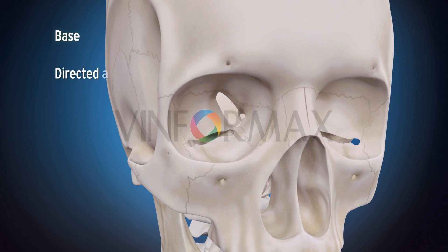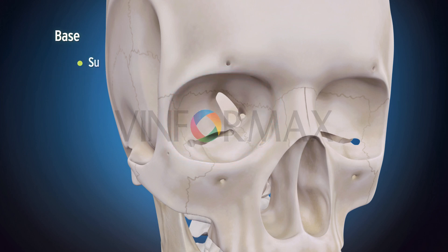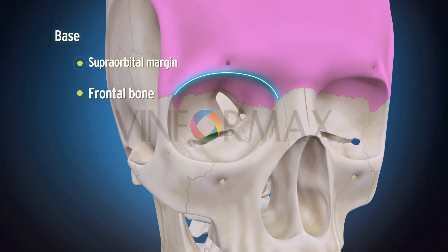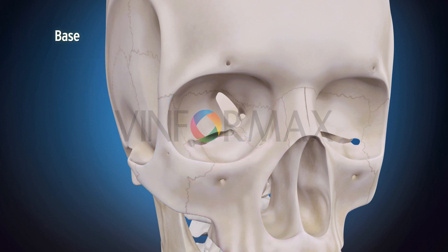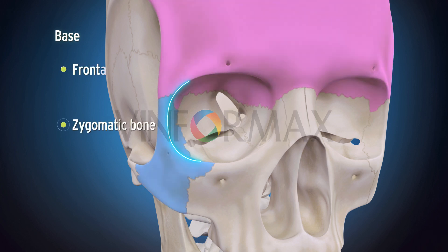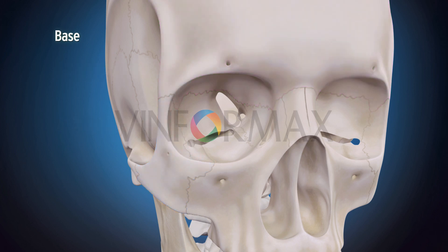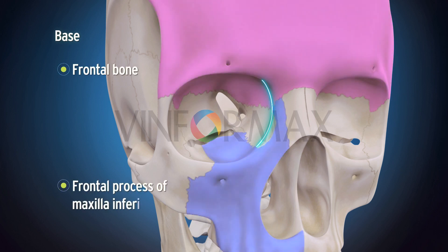The base is directed anteriorly and is formed by the orbital margins. The supraorbital margin is formed by the frontal bone, with the supraorbital notch or foramen present at the junction of the medial one-third and lateral two-thirds. The infraorbital margin is formed by the maxilla medially and the zygomatic bone laterally. The lateral orbital margin is formed by the zygomatic bone inferiorly and the frontal bone superiorly. The medial margin is formed by the frontal bone superiorly and the frontal process of maxilla inferiorly.